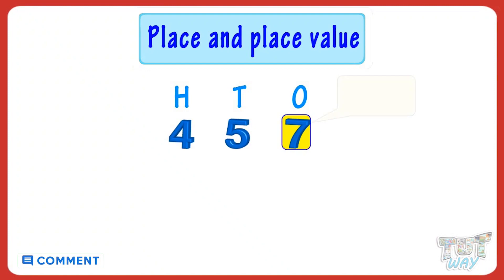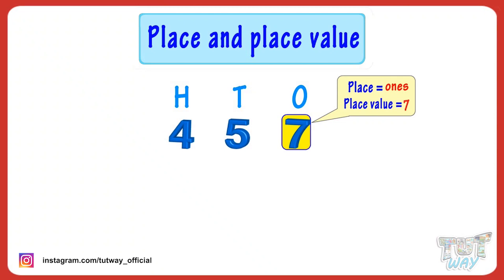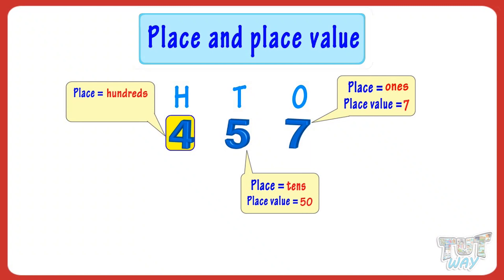Let's start with seven. Its place is the ones place, and its place value is seven ones, that is seven. The place of five is the tens place, and its place value is five tens, that is fifty.